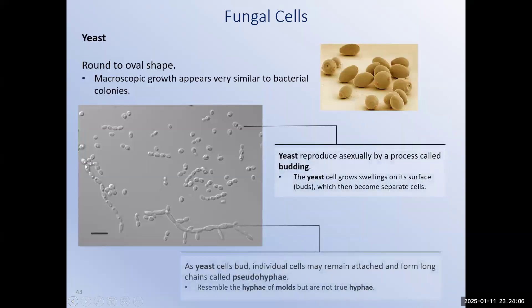Yeast are fungal cells that have an oval or round shape. The yeast can live independently but may form long strands as well. We don't refer to these as hyphae because they're not true hyphae. When yeast cells reproduce by a process called budding, which is very similar to the way a bacterium divides, some of the yeast cells stay attached to one another. These chains of connected yeast cells are referred to as pseudohyphae, or false hyphae.